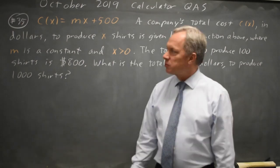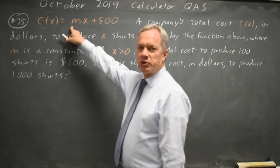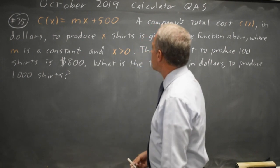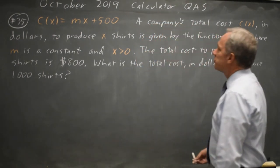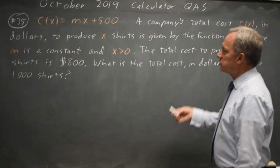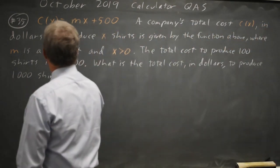This is question 35. The College Board gives the equation for the cost of producing x shirts where we don't know the value of the slope m, but they do give us the cost for 100 shirts is $800.